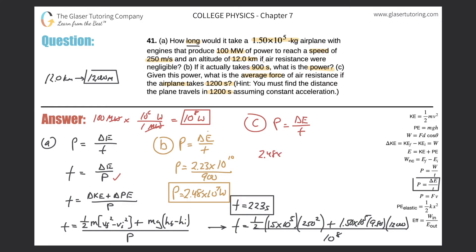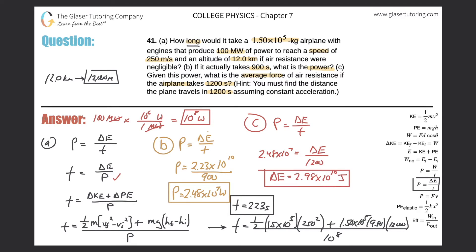Cross-multiplying to find the change in energy: 2.48×10⁷ × 1,200 = 2.98×10¹⁰ joules. We notice this energy value has increased compared to before, because there's now air resistance that the plane had to overcome. To find the average force, I need to relate force to energy via W = F × d × cos(θ), so I need the distance.